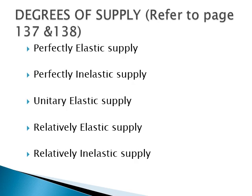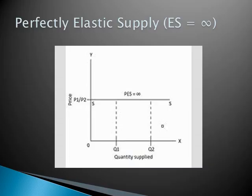The first one is perfectly elastic supply. On your screen, in the bracket, there is a formula showing the infinity sign, which means something limitless — something which can go to any extent. Therefore, perfectly elastic supply is a situation when there is no change in the price, but the quantity supplied may change to any extent — it can go to any limit.